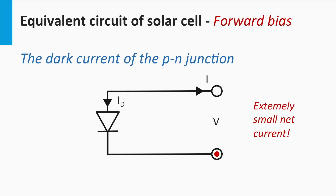Now we consider a P-N junction in the dark under forward bias. The P-N junction generates a significant current in the forward direction of the diode. Since current direction is defined by the flow of positive charge, under forward bias the electrons responsible for the current flow in the block direction of the diode. Note that the current under forward bias is opposite and much higher than under reverse bias.